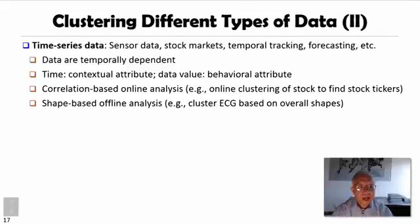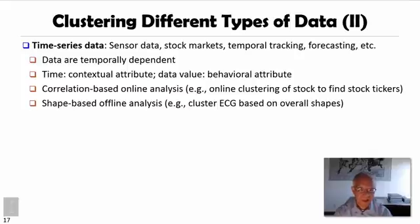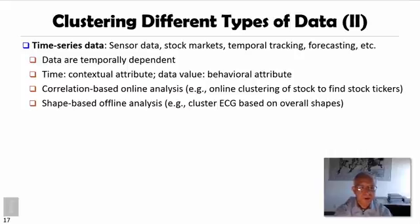For video and music data, we can consider the temporal ordering of records to represent meaning. Time series data is another commonly encountered data type, seen in sensors, stock markets, temporal tracking, or forecasting tasks. Time series data are considered temporally dependent and usually have equal intervals. Time can be considered a contextual attribute and data values as behavioral attributes. Analysis includes correlation-based online analysis, like online clustering of stocks to find stock tickers, or shape-based offline analysis, such as clustering ECG signals based on overall shapes.